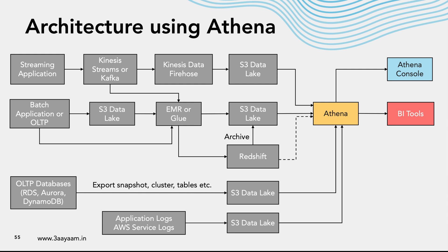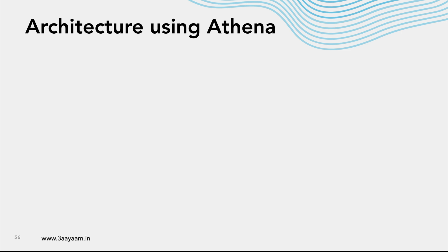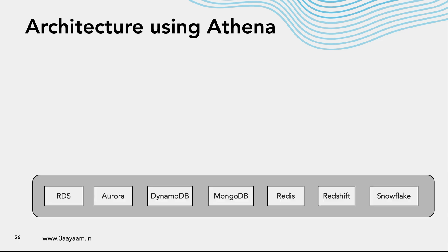In most of the cases shown, the data is in S3 data lake and from there we are using Athena. But let's say we have data in various different data sources — data in RDS, Hive, Redshift, Aurora, DynamoDB, MongoDB (a document-oriented database), in-memory databases like Redis, and data warehousing systems like Redshift and Snowflake. There are various data systems available in an organization.